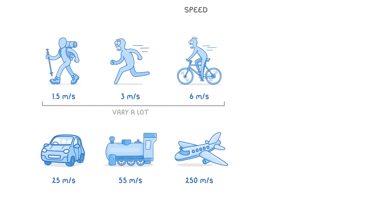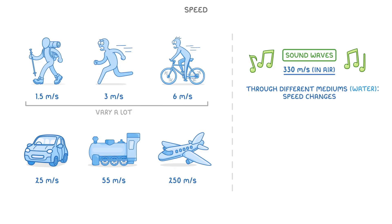It's not only the speed of objects that varies though. As we'll see in a later video, sound waves travel at 330 metres per second, when they're in air, which is a figure that you need to remember. But when they're travelling through different mediums, like water, their speed changes.